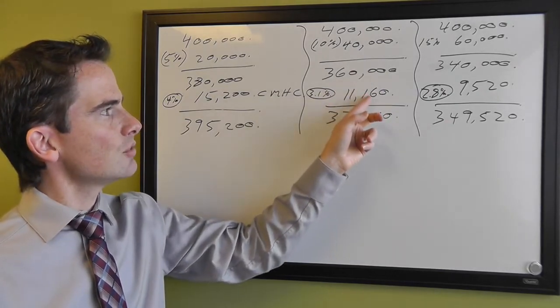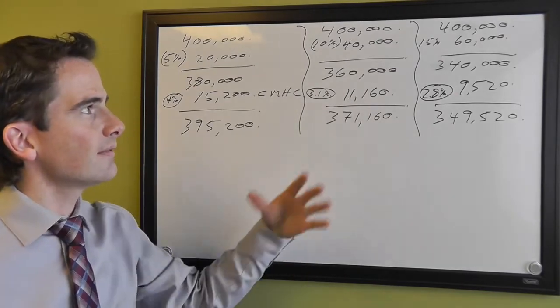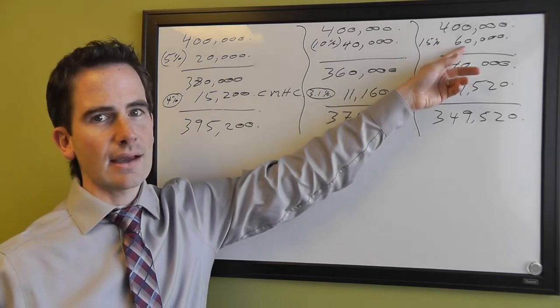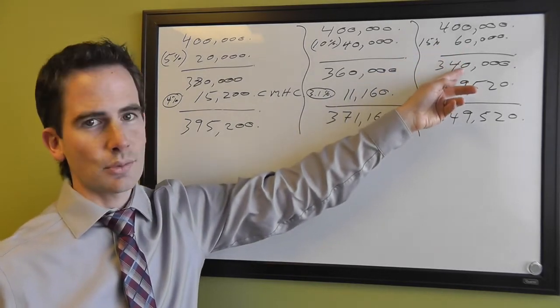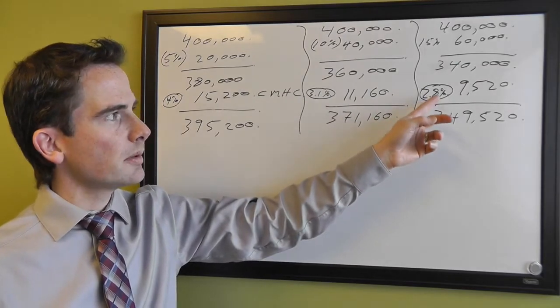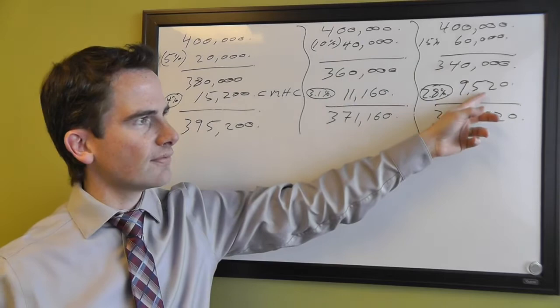That gets added to the mortgage to give a full mortgage of $371,000. And then, of course, if you're buying a house with 15% down on $400,000, that's $60,000 down. The difference then is $340,000 on the mortgage. So then the CMHC premium is 2.8% of the mortgage amount, which is $9,520.